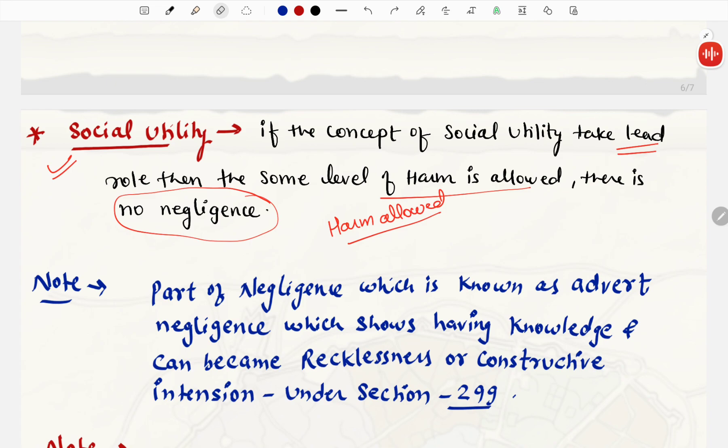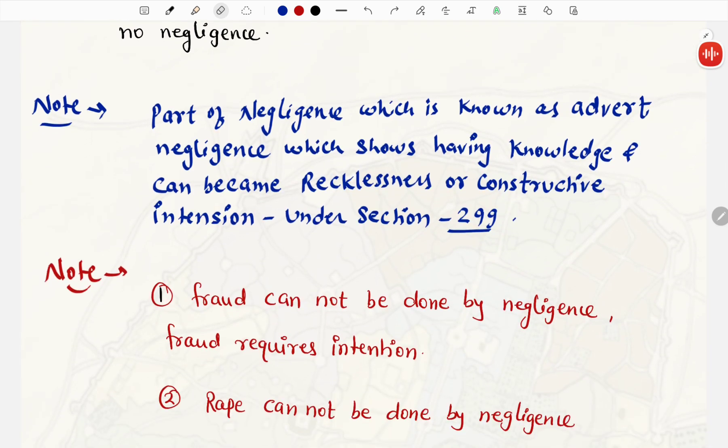Jo term hai, social utility, woh negligence ko khatam karthai hai, there is no negligence. Agar doctor bol de, ki yaha par social utility hai, ki yaha par covid patients the, hamare ward ke andar, that's why we are providing you the side bed. Negligence part hota hai, uske andar, knowledge bhi show hoti hai, aur woh recklessness ban jaye, la parwahi ban jaye, ya constructive intention ban jaye, to woh aa jati hai, culpable homicide ke andar, section 299.